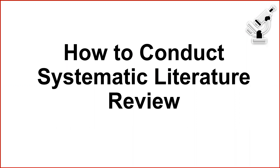Welcome to Ferritech channel. Today we are discussing how to conduct a systematic literature review in simple steps. Even though there is a general literature review that all of you know, there is one more specific type — the systematic review — which holds no bias while carrying out the review. It involves very transparent methods to collect the proofs together and make them as evidence without any bias.